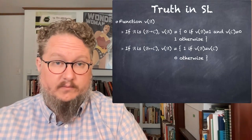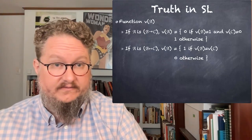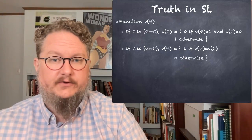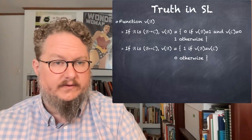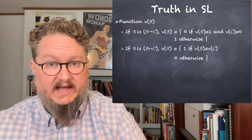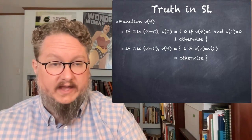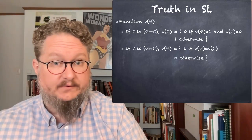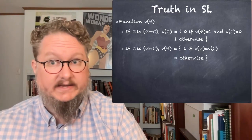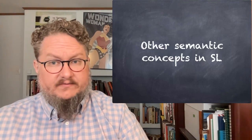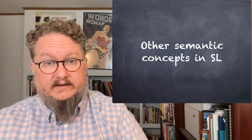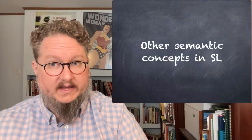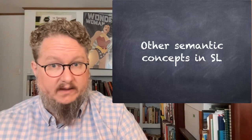If you apply this definition of V to any sentence of SL, no matter how complex, you'll get a one or a zero out, based on whatever your truth value assignment A is. Now that we have a definition of truth in SL, we can define other important semantic concepts.